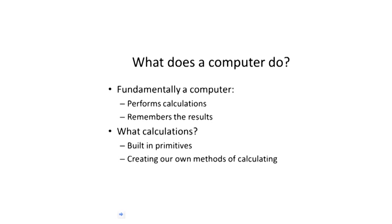So our computers are going to do calculations for us, using a set of built-in primitives plus things that we add. You might ask, is that enough? If it turns out that a computer can just perform primitive calculations, is that sufficient? Well, as I'm sure you already realize, modern computers can perform those calculations incredibly quickly. So one question is, if we can do them fast enough, is that sufficient to do interesting things?